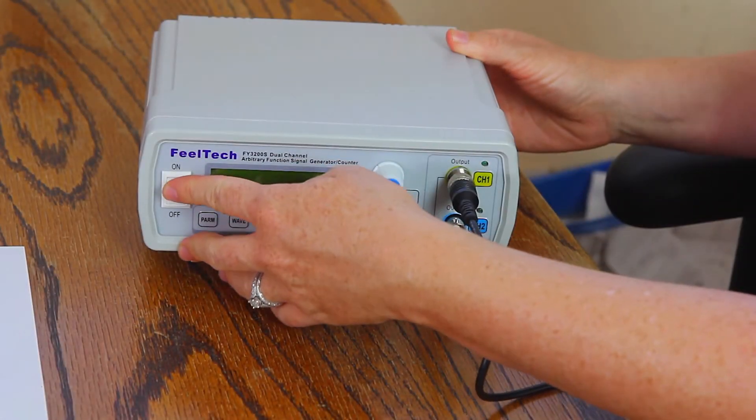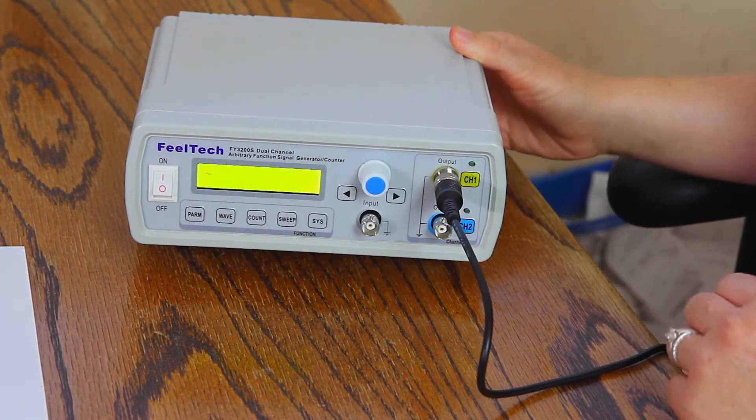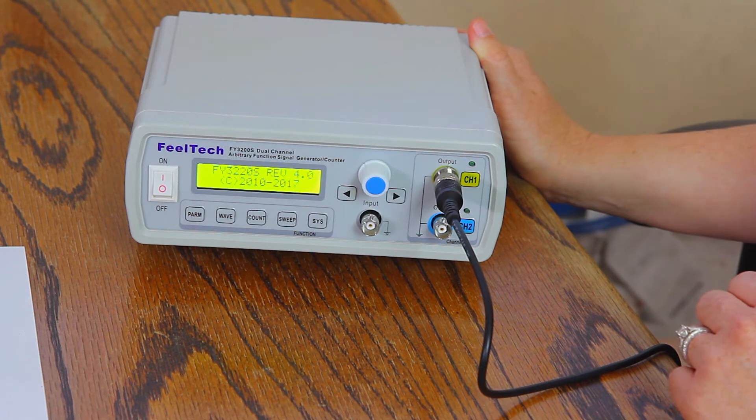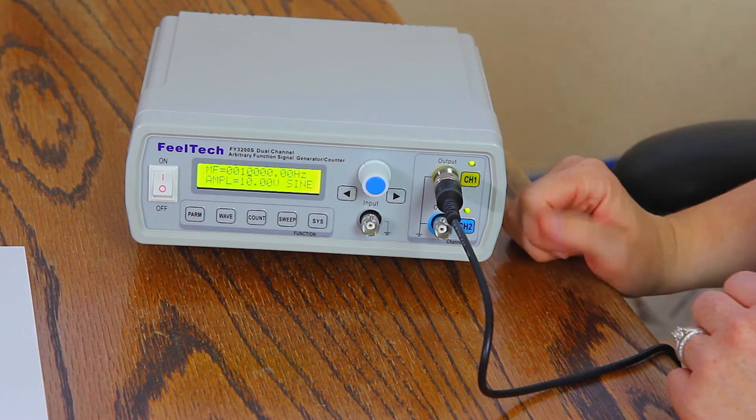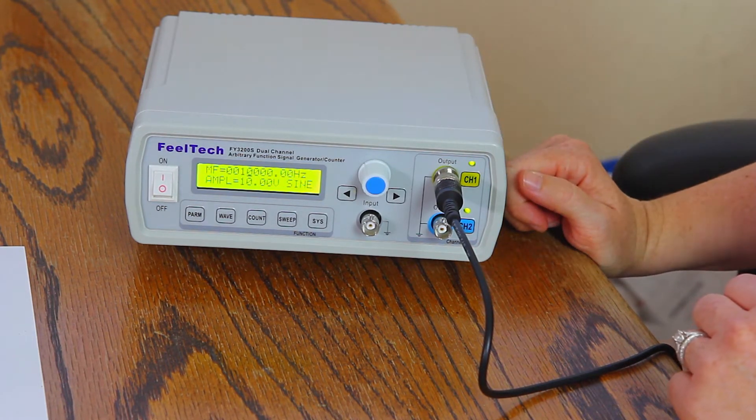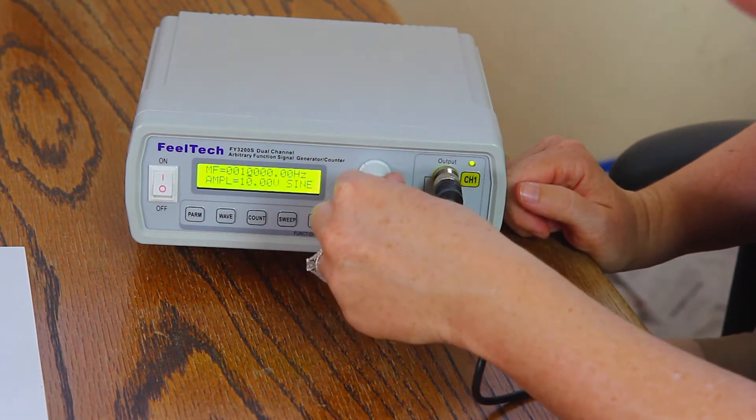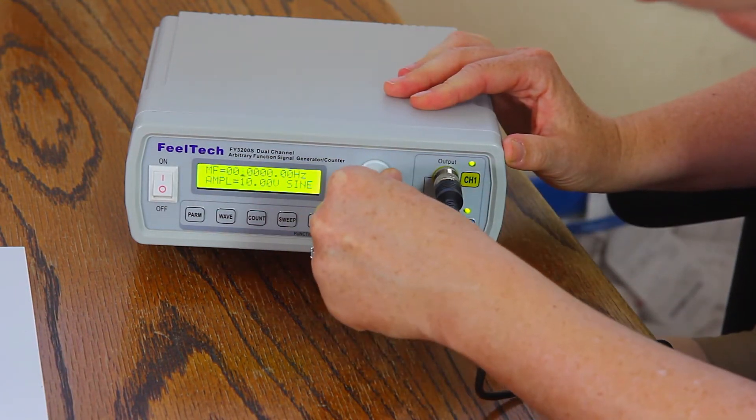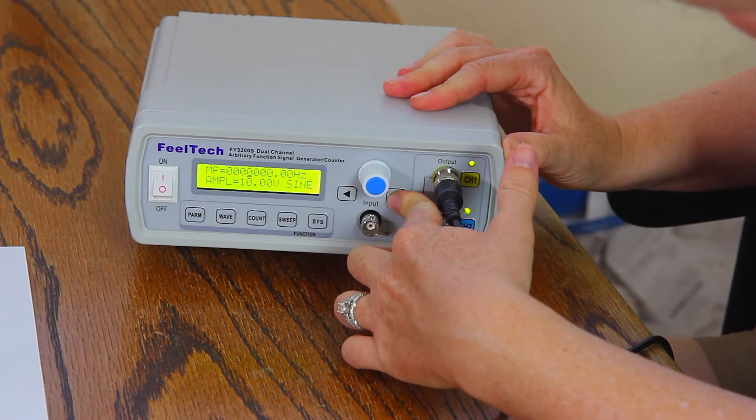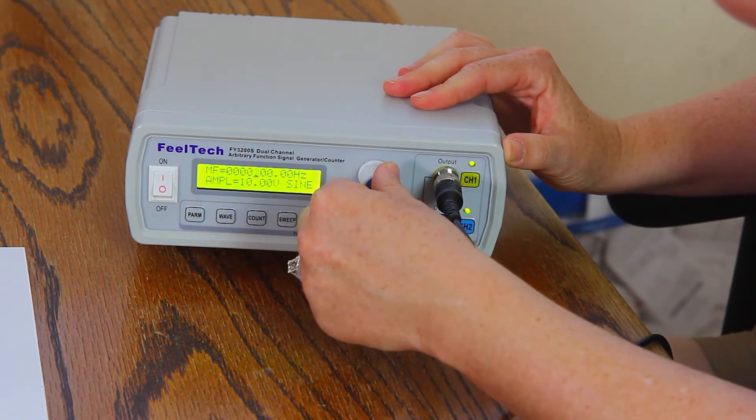Turn the machine on and now we can set the frequency. The default is 10,000 Hertz and we can change that by using this dial and now set the frequency to 728 Hertz.